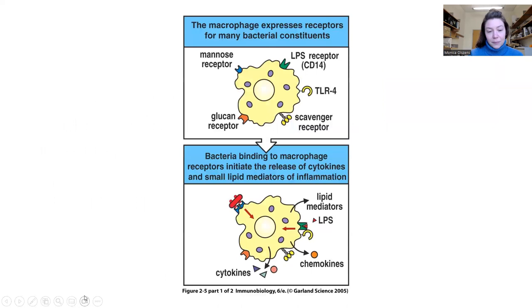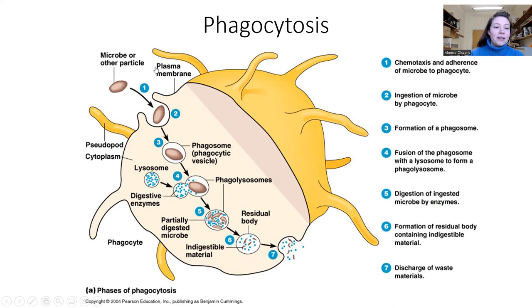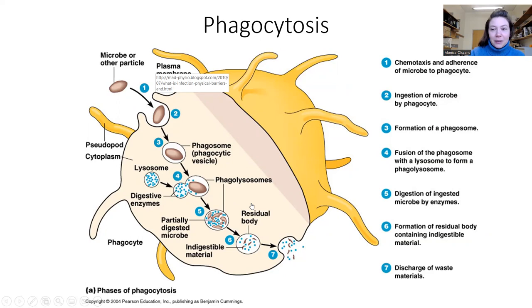Here's phagocytosis. You start off with this mature macrophage — they're showing it's mature by drawing these little feelers out there. If this were a monocyte, it would just be a boring sphere. But it's definitely a mature macrophage. Here's a bacteria — it's going to eat it.